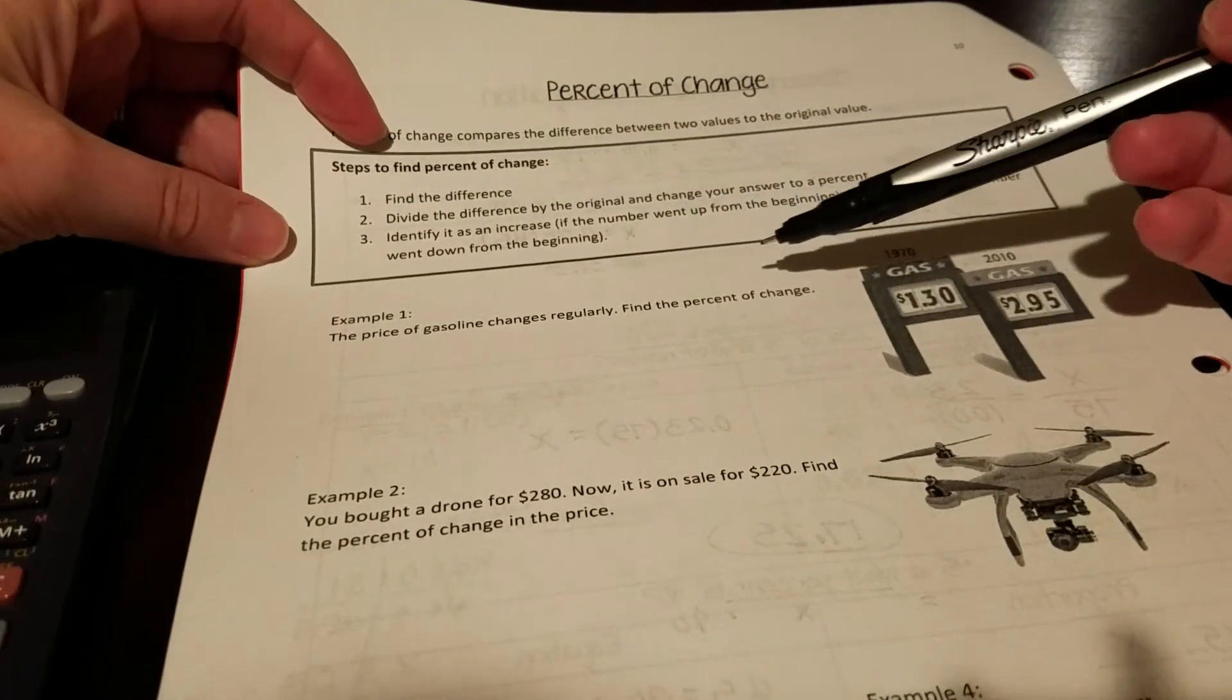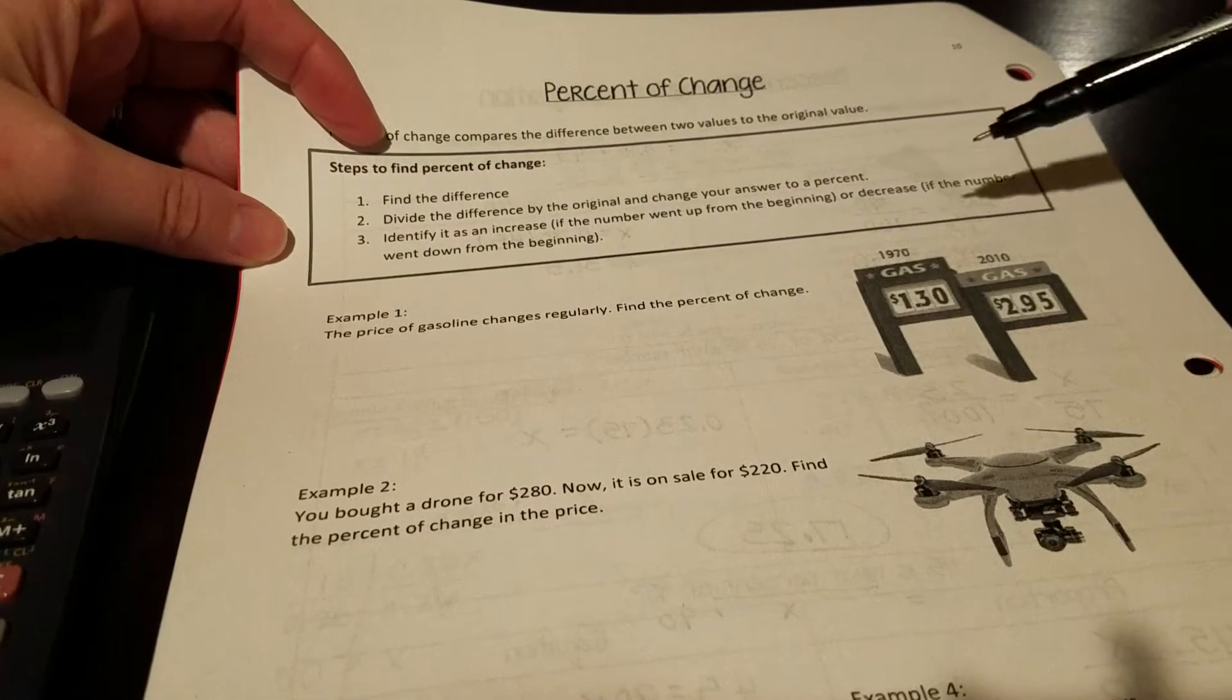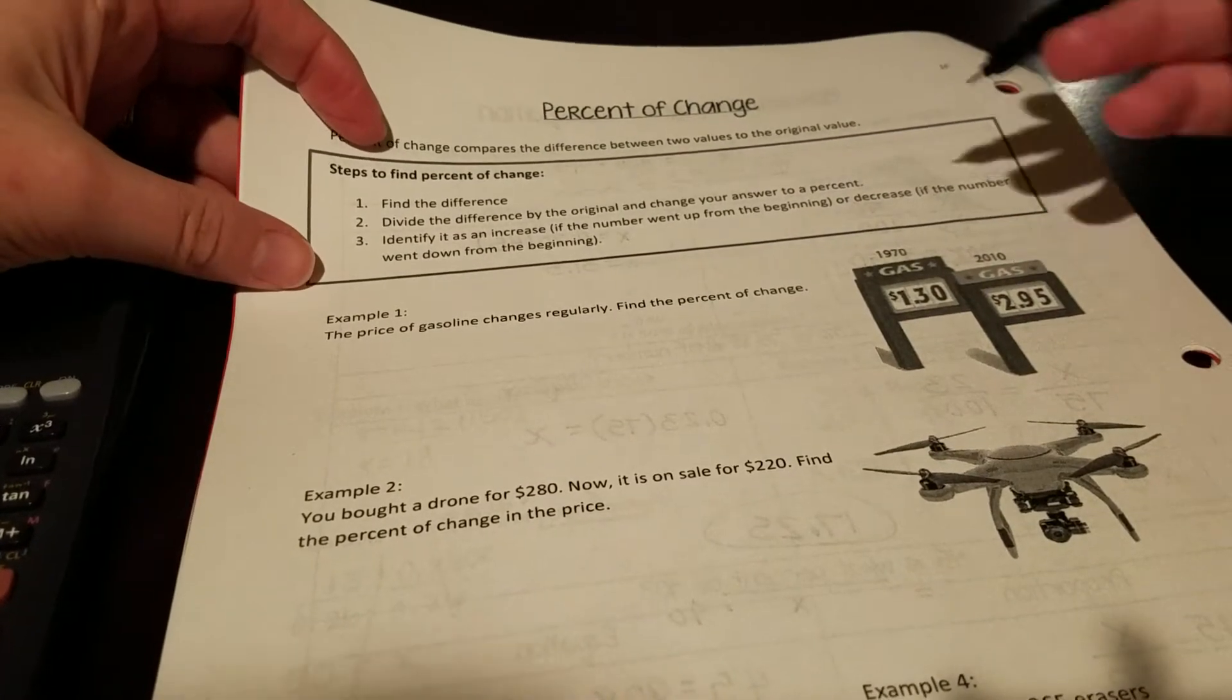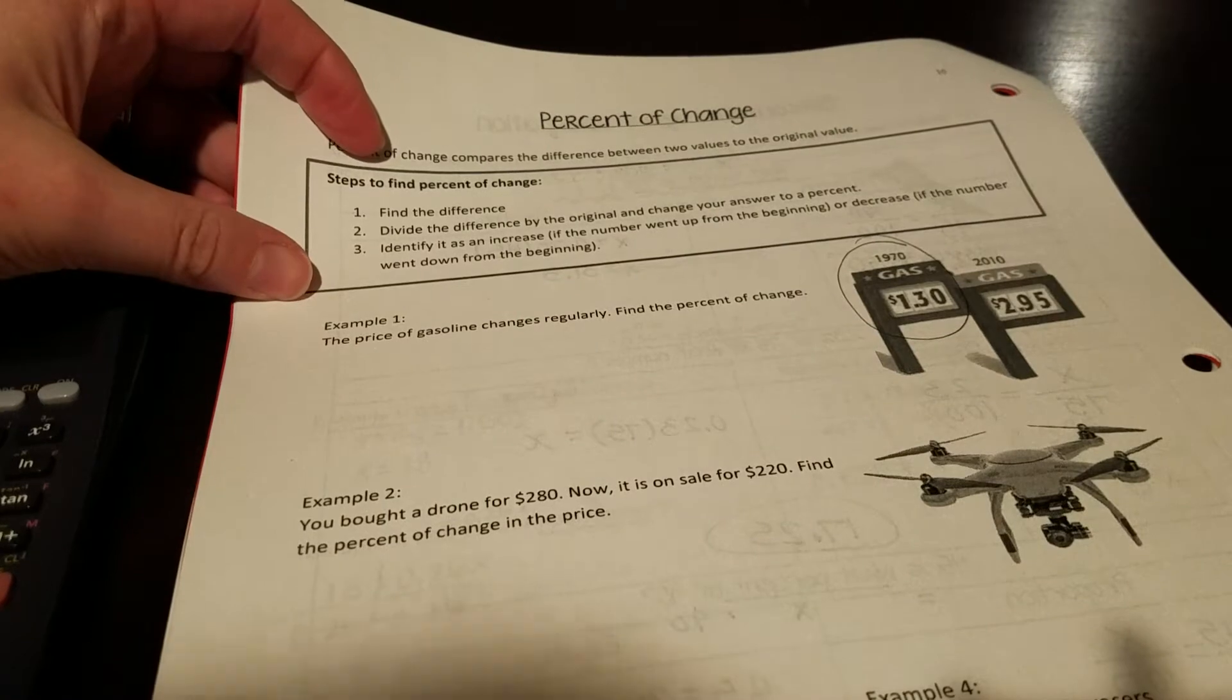So example one, the price of gasoline changes regularly. Find the percent of change. So here's a 1970 price versus a 2010. This is going to be our original.